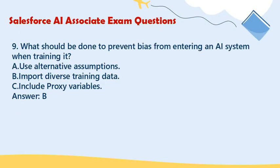Question 9: What should be done to prevent bias from entering an AI system when training it? A. Use alternative assumptions. B. Import diverse training data. C. Include proxy variables. Answer: B.